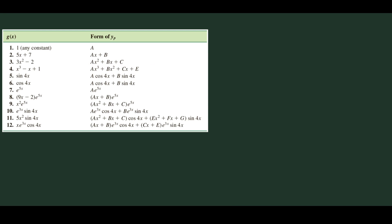The fourth one is a polynomial function of degree 3, so its general form is ax cubed plus bx squared plus cx plus e.